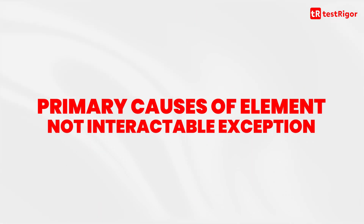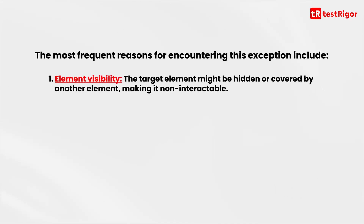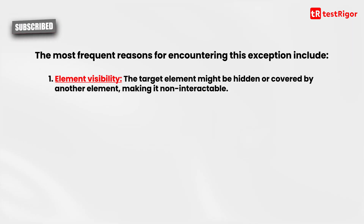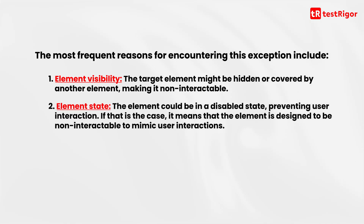Primary causes of element not interactable exception. The most frequent reasons for encountering this exception include: number one, element visibility — the target element might be hidden or covered by another element, making it non-interactable. Number two, element state — the element could be in a disabled state, preventing user interaction. If that is the case, it means that the element is designed to be non-interactable to mimic user interactions.